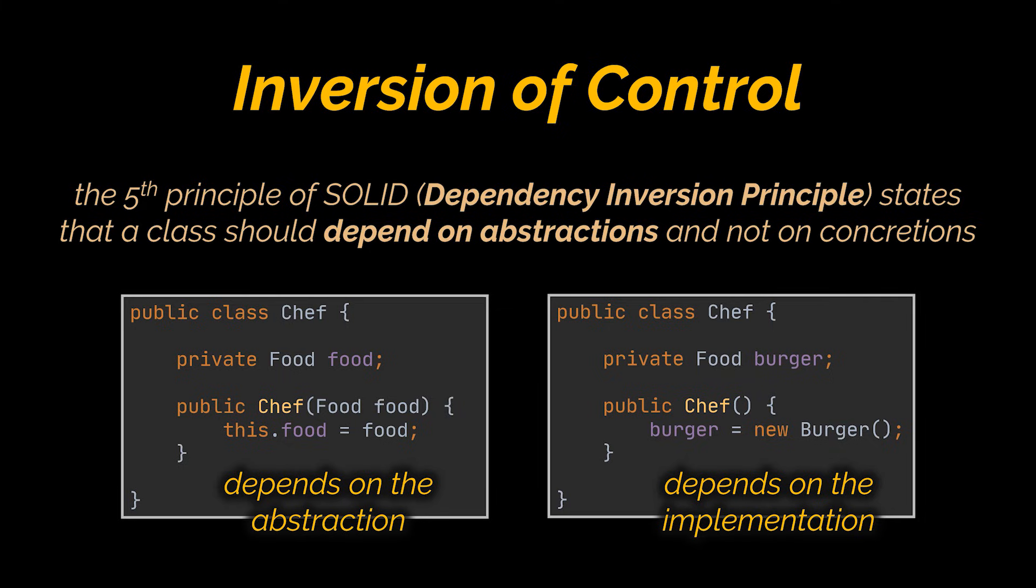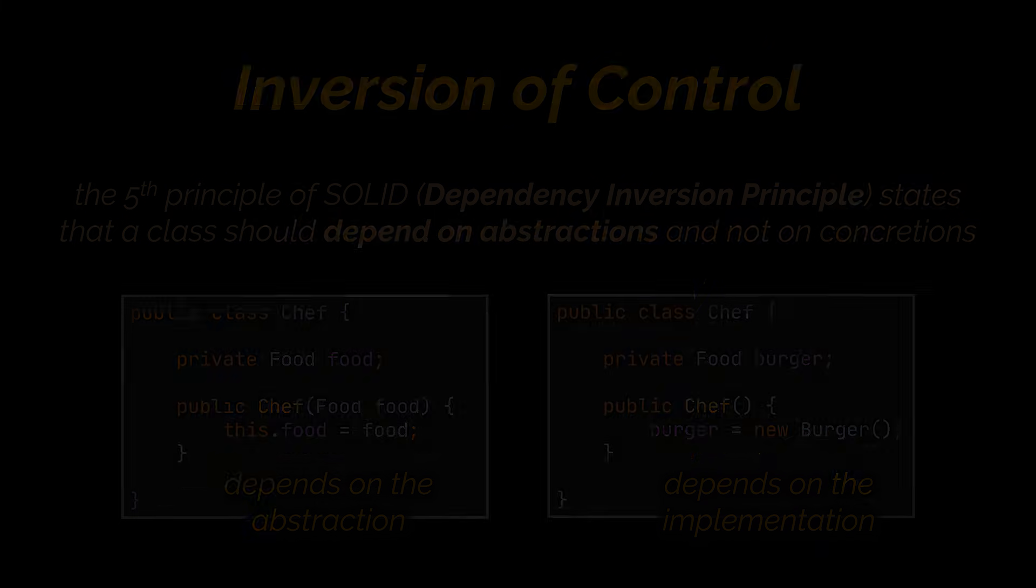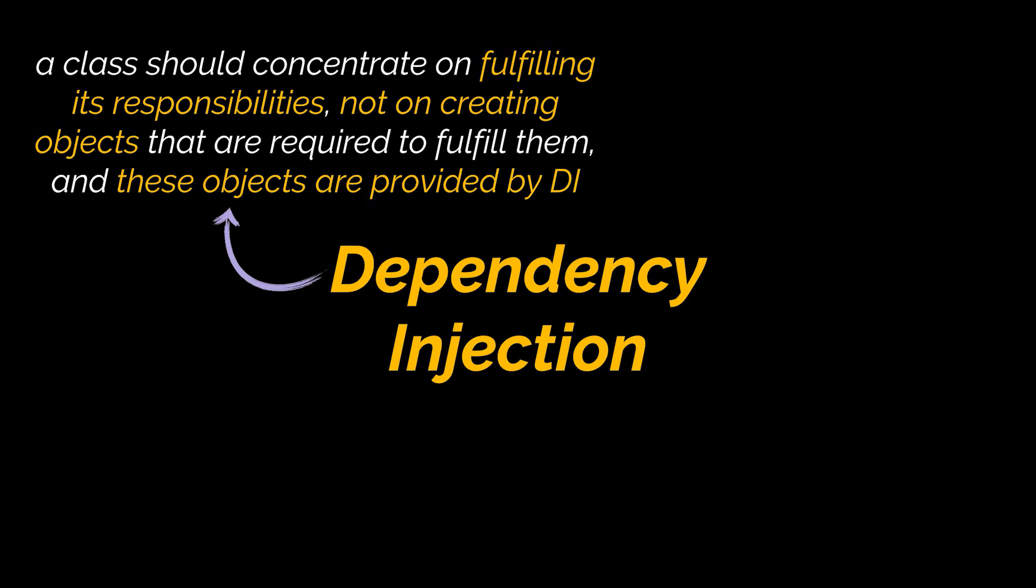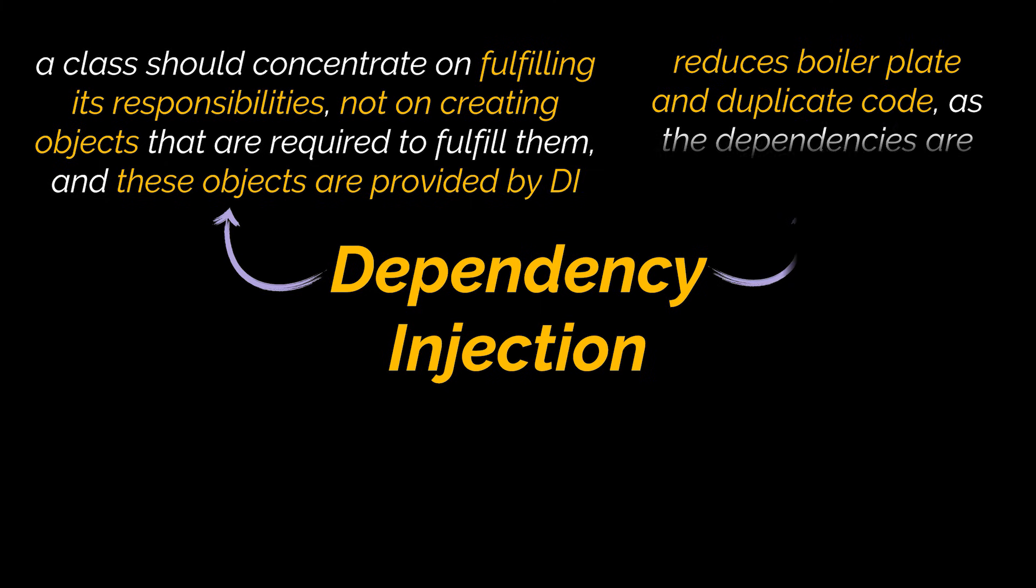You see, a class should concentrate on fulfilling its responsibilities and not on creating objects that are required to fulfill those responsibilities. And that's where dependency injection comes into play - it provides the class with these required objects. By doing this, you'll be reducing boilerplate and duplicate code as the initialization of the dependencies is done by the injector component.